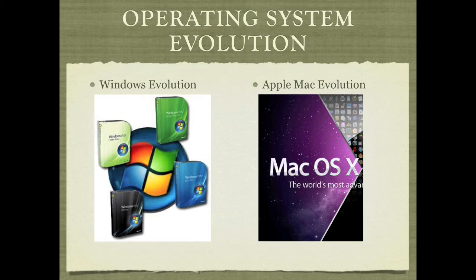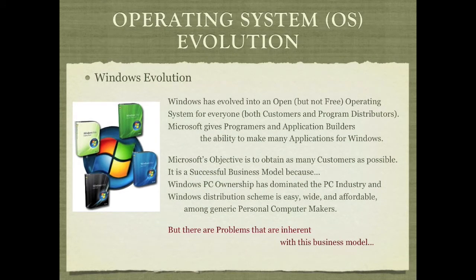Let's talk first about the Windows evolution. Windows has evolved into an open but not free operating system for both customers and program distributors. Microsoft gives programmers and application builders the ability to make many applications for Windows. Microsoft's objective is to obtain as many customers as possible. It is a successful business model because PC ownership has dominated the PC industry, and the Windows distribution scheme is easy, wide, and affordable among generic personal computer makers.